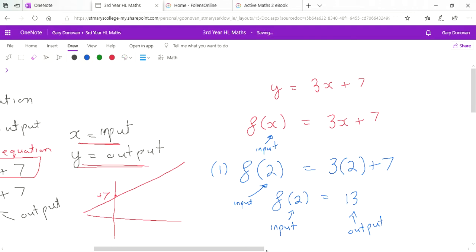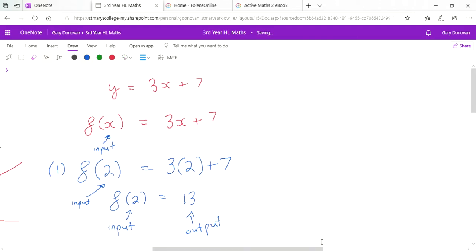They might call another function g of x equals 2x minus 7. Again, you just put in your inputs and your answer is your output.